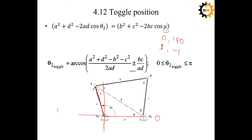For mu = 0° we use +1, and for mu = 180° we use −1. Once the first toggle position is calculated, there is a second toggle position for the same four-bar mechanism, which is a mirror image of the first. In this way we can calculate both toggle positions for a non-Grashof triple-rocker four-bar mechanism.